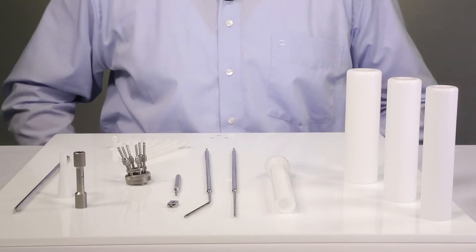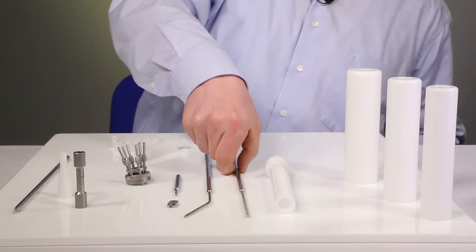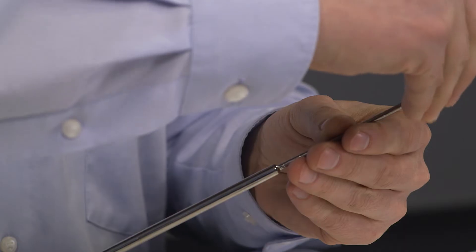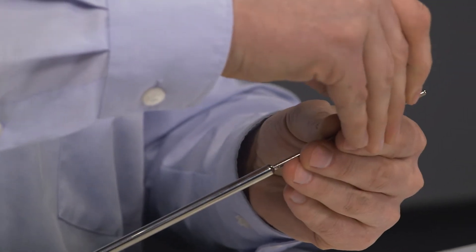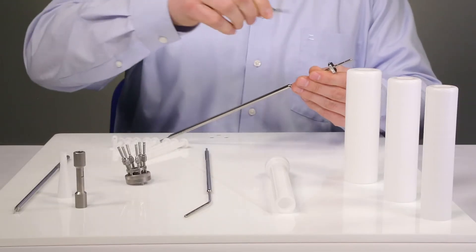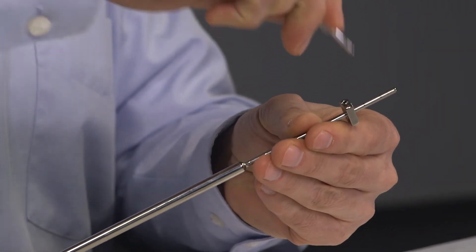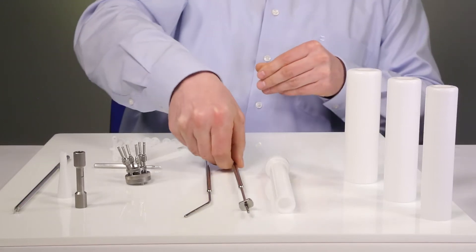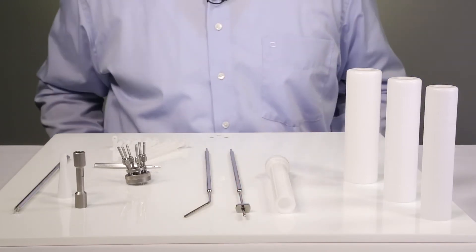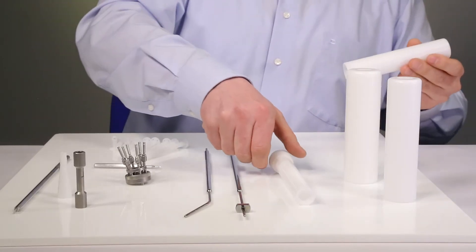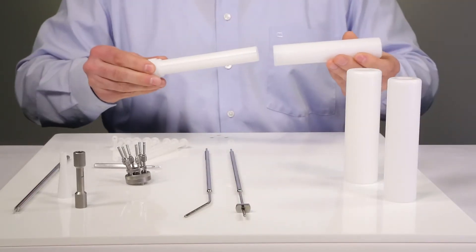Now let's start with the assembly. First I fix the cervical stop on the intrauterine tube. Now I select the small build-up cap and screw it onto the applicator body.